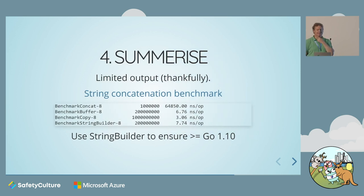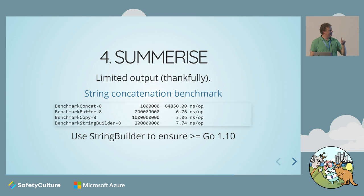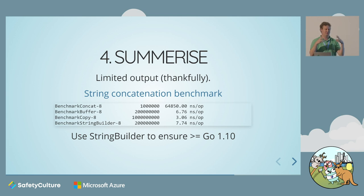The last step is to summarize everything. We've got limited output, thankfully. There was a very nice string concatenation benchmark on Stack Overflow showing all the ways you can combine a string. I'm not actually going to use the fastest one — I went with StringBuilder. The reason was explicit: it ensures you have to build with a recent version of Go, so I'm guaranteed a baseline level of performance. I also found a library that does column output for you, but when I looked at it, it was twice as slow as mine. So I just use mine.